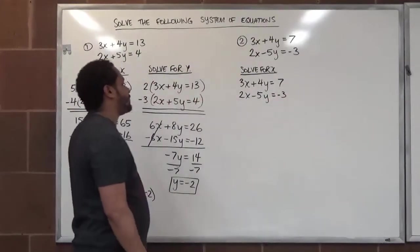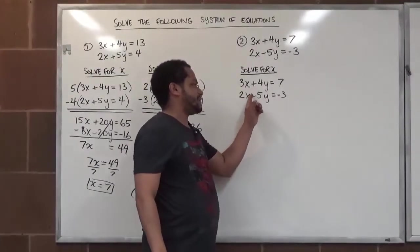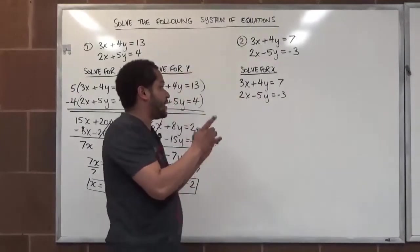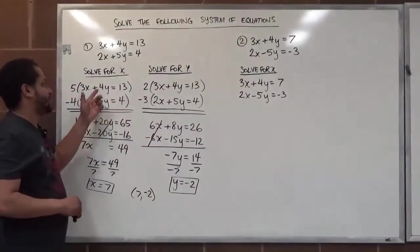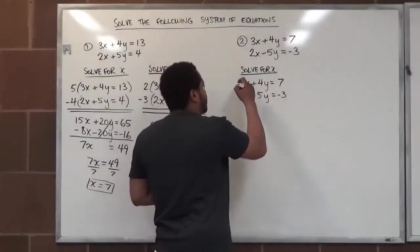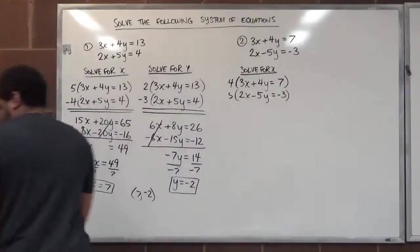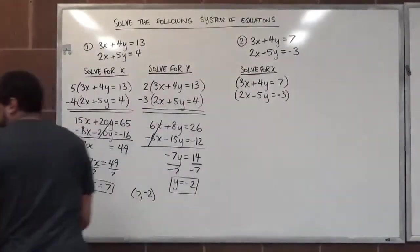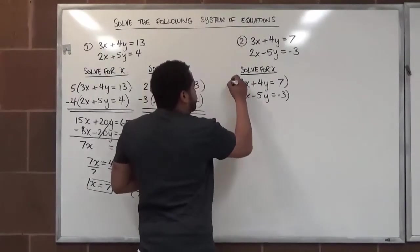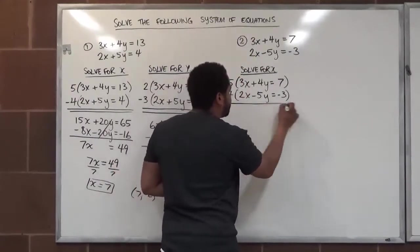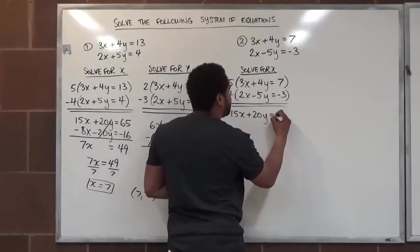Now we have a new system. Solving for x means canceling the y's. The signs are already opposite, so we just need to make them the same magnitude. The LCM of 4 and 5 is 20. We multiply the top line by 5 and the bottom line by 4. This gives us 15x plus 20y equals 35 on the top line.